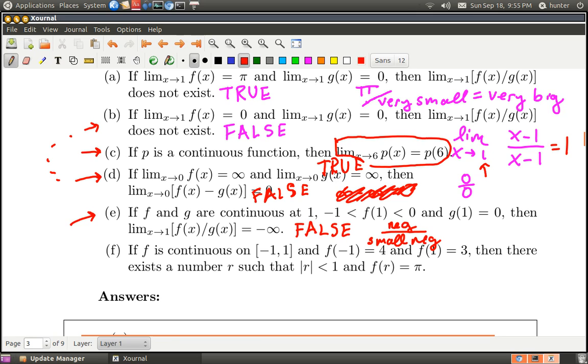Now you've got a negative over a small negative. This is basically like 1 over a small number—the negative signs cancel and you get something big. So you can force this limit to be positive infinity instead of negative infinity. It doesn't necessarily have to be negative infinity. If g goes to zero from the negative side, you can make it positive infinity. That's why this one is false.